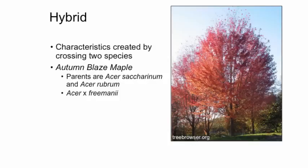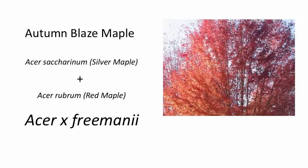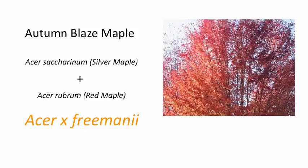Plant breeders cross different species to develop plants with superior characteristics. Hybrids are indicated with an X in their botanical name. One example is Autumn Blaze maple, which is the result of plant breeding using Acer saccharinum, silver maple, and Acer rubrum, red maple, as parents. It grows faster than either parent due to hybrid vigor and is somewhat more tolerant of alkaline soil than either parent.